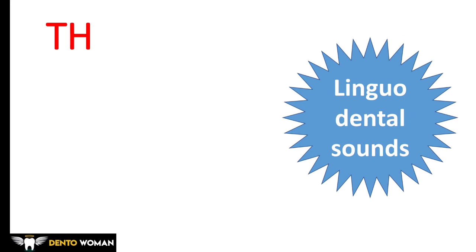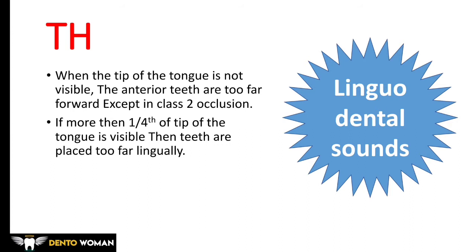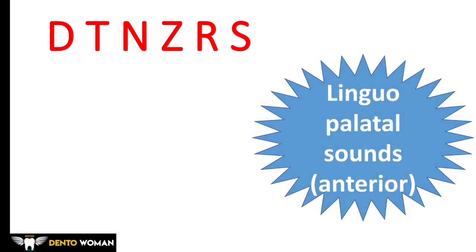Lingua dental sounds, like the 'TH' sound: the tip of the tongue extends outside the upper and lower anterior teeth. When the tip of the tongue is not visible, the anterior teeth are too far forward — except in Class II occlusion. If more than one-fourth of the tip of the tongue is visible, then teeth are placed too far lingually. Excessive vertical overlap does not provide sufficient space for the tip of the tongue, which affects this sound.